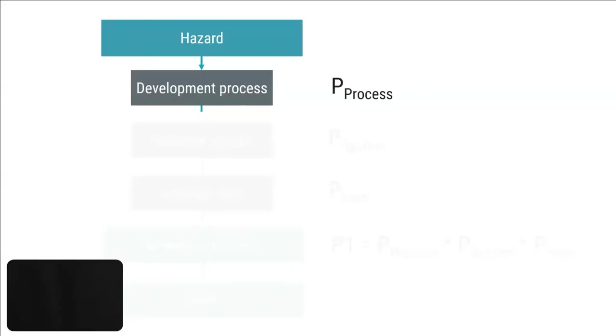IEC 62304 heavily refers to software items when talking about software risk management. However, from a general risk management perspective, I recommend looking at three different places when searching for software risk control measures. You will now get a brief introduction to all three. First: what can you do in your development process to reduce the likelihood of a failure?